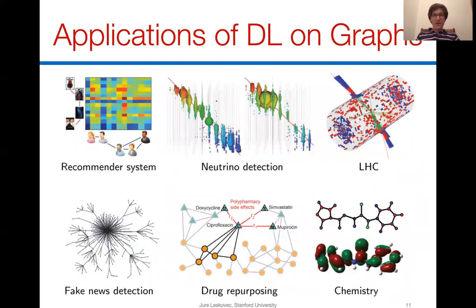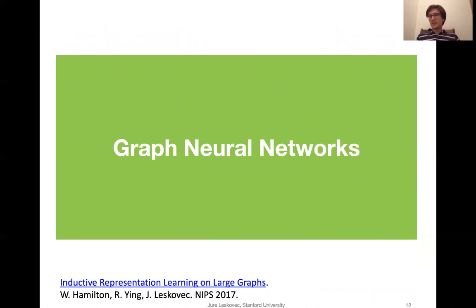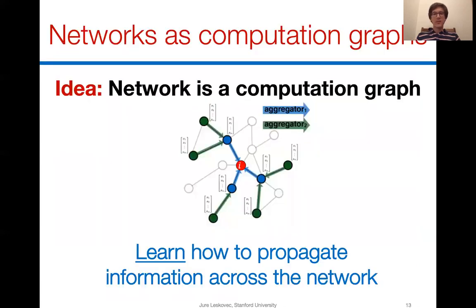The methods we are developing can be applied in large-scale recommender systems. We are working with physicists on neutrino detection and large-scale physics simulations, as well as applications in pharmacology, drug discovery, and chemistry. The framework that allows us to learn in an end-to-end way over graphs is called graph representation learning, and the class of models we are investigating go under the name of graph neural networks.